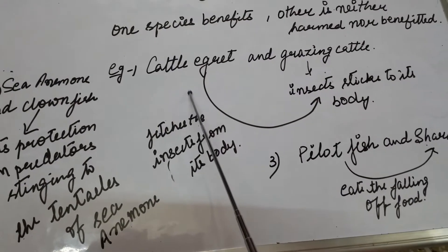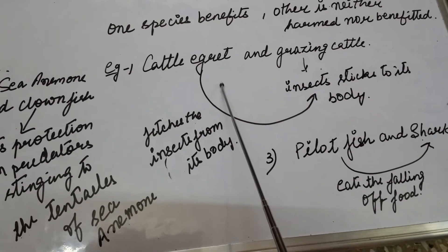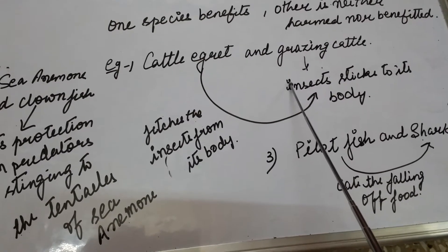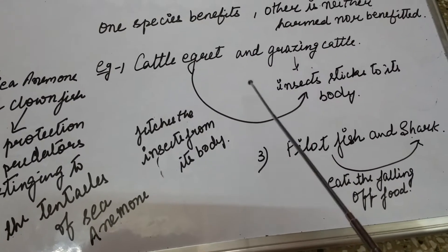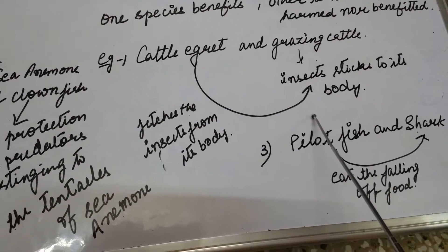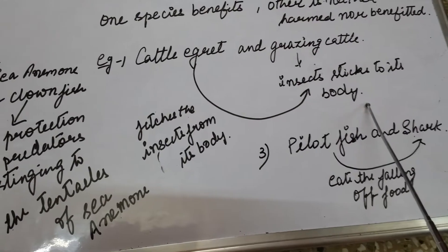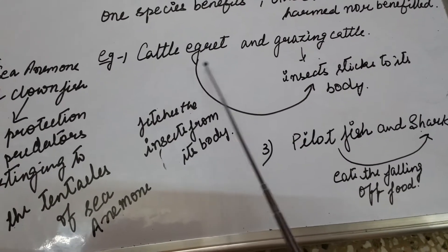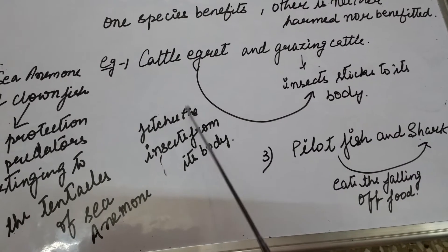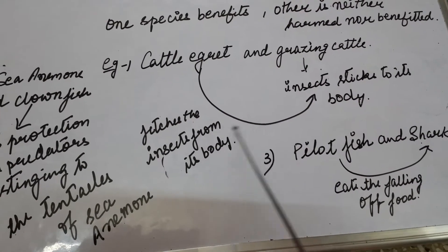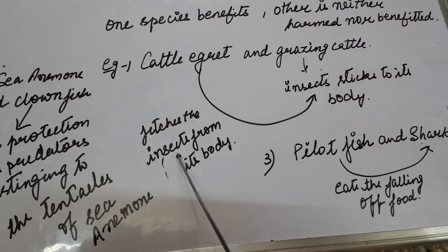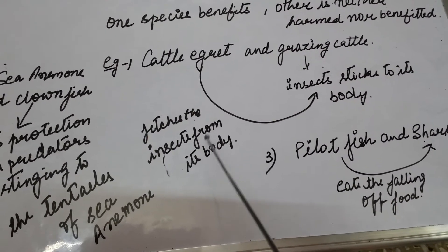For example, in the case of cattle egret — in the cattle egret and grazing cattle association — as the cattle moves or grazes, insects stick to its body. The egret bird perches on the body of the cattle and picks out all the insects that are present on its body.